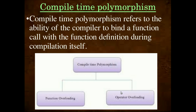Compile Time Polymorphism refers to the ability of the compiler to bind the function call with the function definition during compilation itself. The polymorphism occurs during compile time. Compile Time Polymorphism is classified into Function Overloading and Operator Overloading.